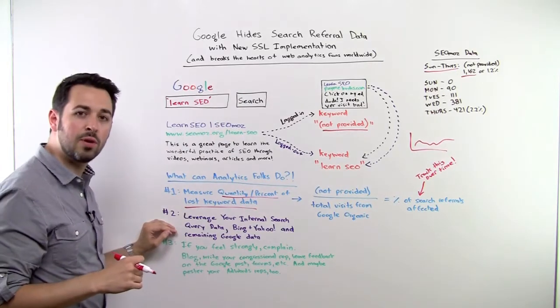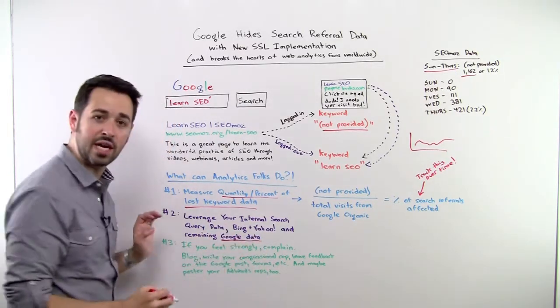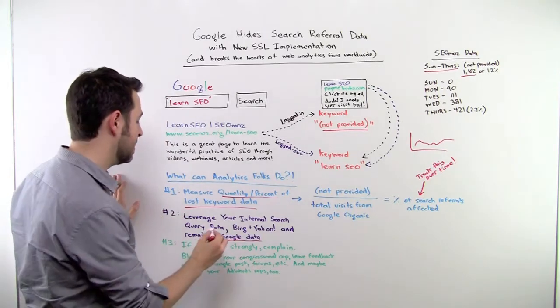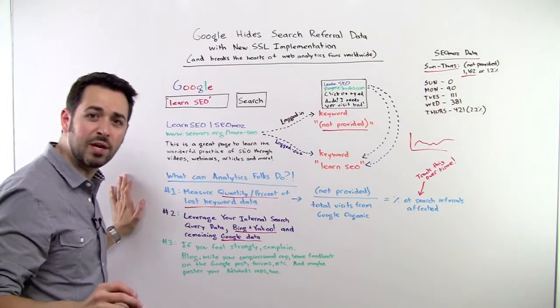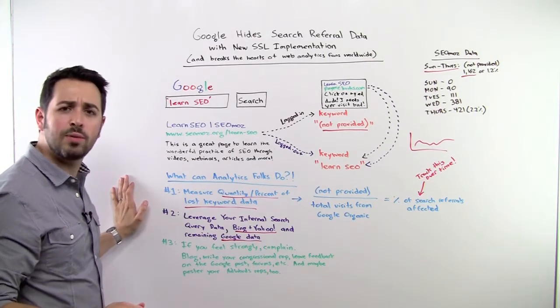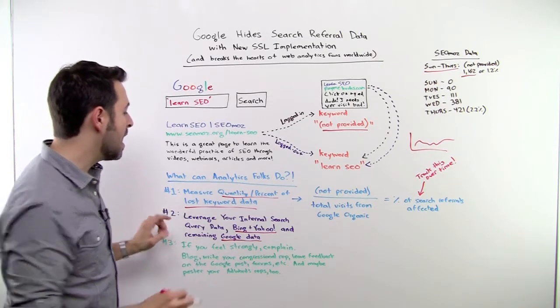That leads me to number two. You can continue to leverage data from sources like the existing Google data, which should be hopefully around 90% of what you have today. Bing and Yahoo data, of course, which are responsible for around anywhere between 10 and 20% of your search referrals, depending on your industry and niche.